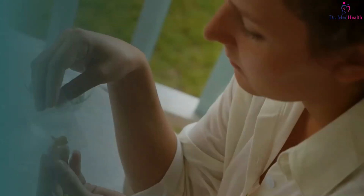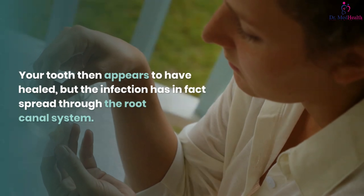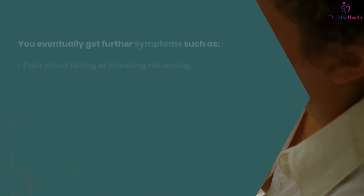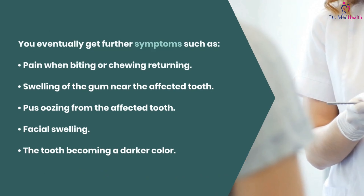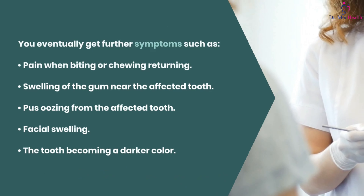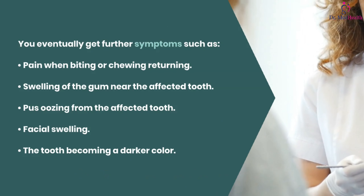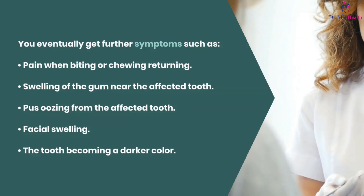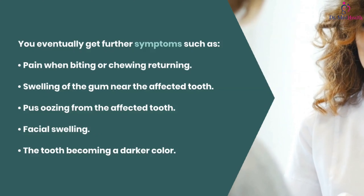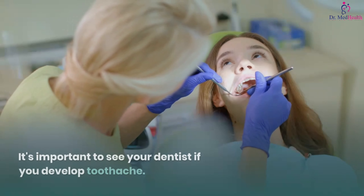As the infection progresses, these symptoms often disappear as the pulp dies. Your tooth then appears to have healed, but the infection has in fact spread through the root canal system. You eventually get further symptoms such as pain when biting or chewing returning, swelling of the gum near the affected tooth, pus oozing from the affected tooth, facial swelling, and the tooth becoming a darker color.